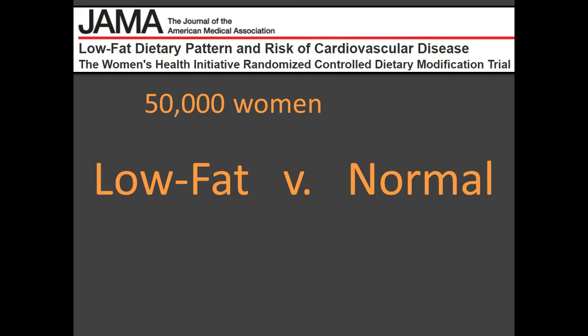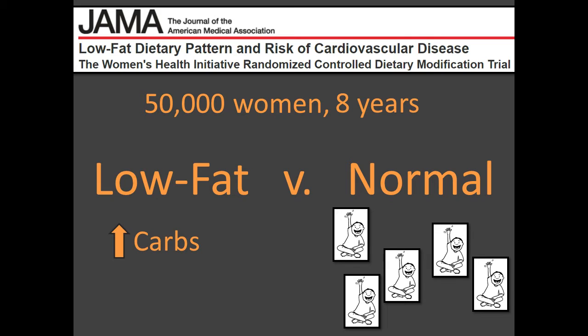50,000 women were randomly assigned to either a low-fat diet or routine American diet. If assigned to the low-fat diet, they were told to reduce total fat intake — all fats were reduced, not just saturated fats. In place of fats, they ate more grains like pasta and bread, and on average about one more serving of fruits and vegetables. They were followed for about eight years. The two groups were actually equal with the same incidence of cardiovascular disease — a surprising finding.